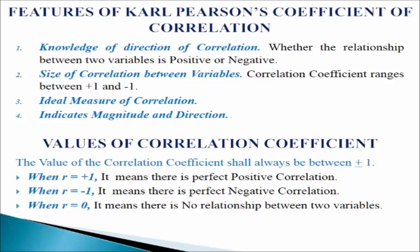Value of correlation coefficient: the value of correlation coefficient shall always lie between positive and negative 1. When r equals positive 1, it means there is perfect positive correlation. When r equals negative 1, it shows that there exists perfect negative correlation between the two variables. If r equals 0, it means there is no relationship between the two variables. However, in practice the correlation coefficient normally lies in between plus 1 and minus 1.